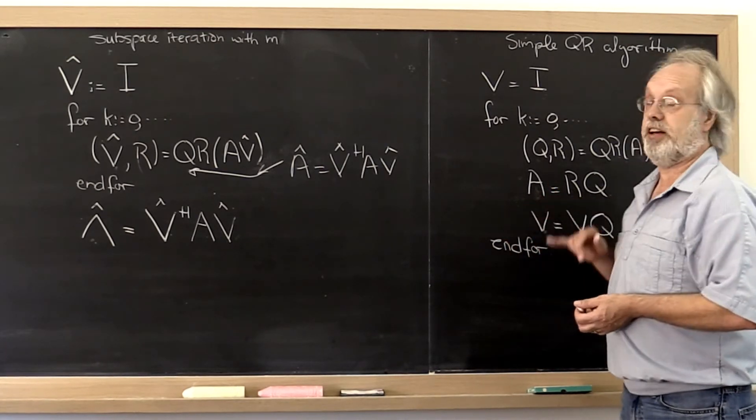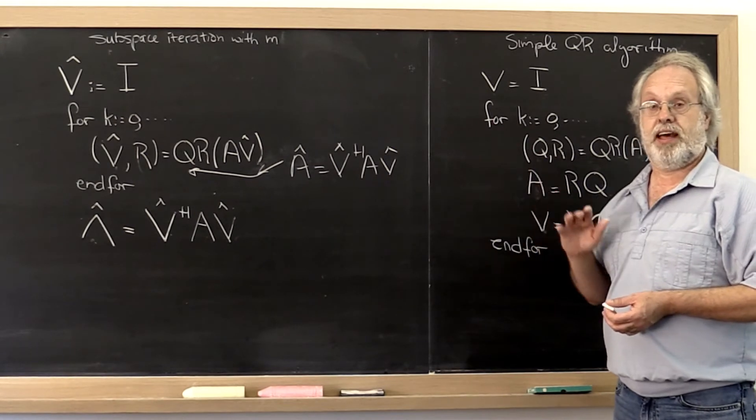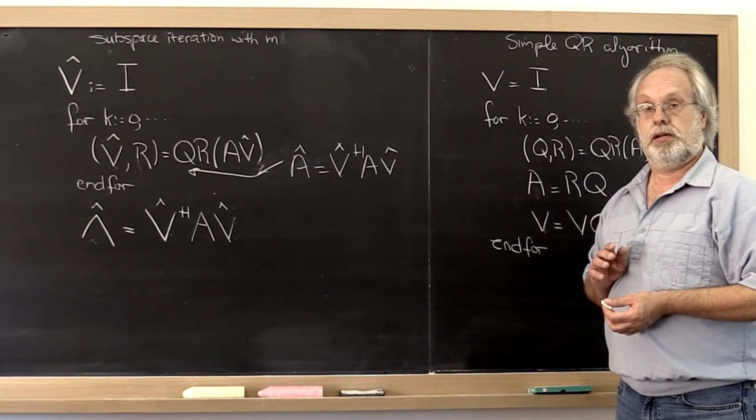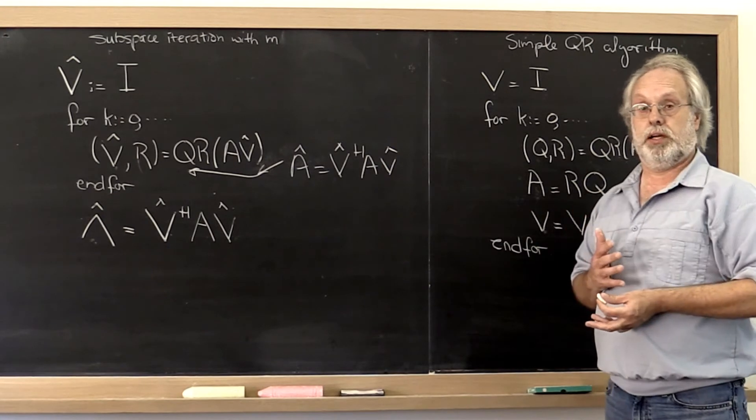eigenvectors associated with the eigenvalues that appear on the diagonal of matrix A. And that's how the two are related to each other.